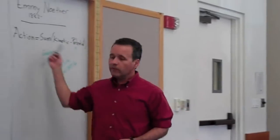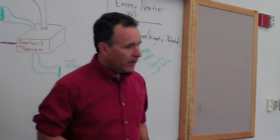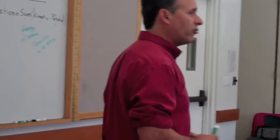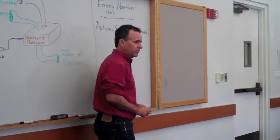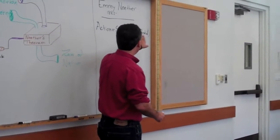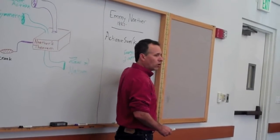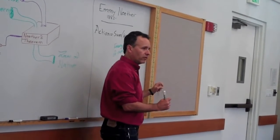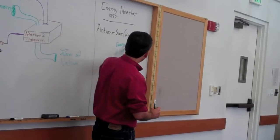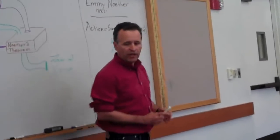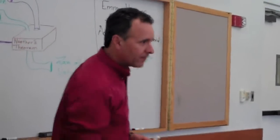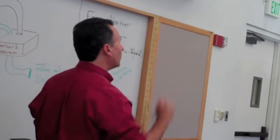So the principle of least action states that any system in nature will progress in such a way that the difference in the energy of motion and the potential to do work is smallest over that path. So you add up the difference, you take the difference in the kinetic and potential energy at every spot as it travels.